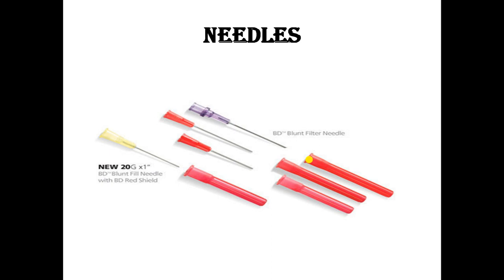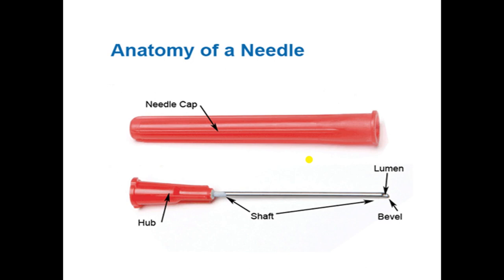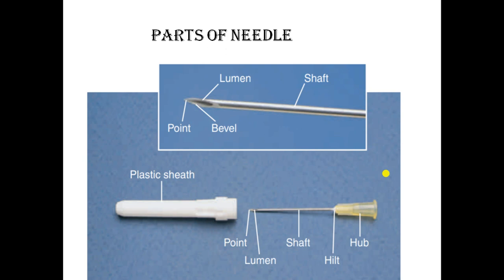Next is the anatomy of a needle, or parts of a needle. The main parts are: the hub, shaft, bevel, and lumen. The lumen is the bore — the hollow interior — of the needle. The bevel is the flat, slanted edge at the tip of the needle.